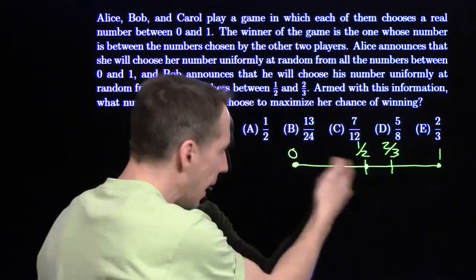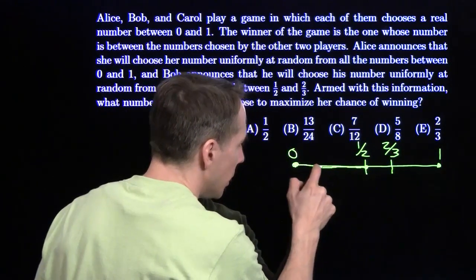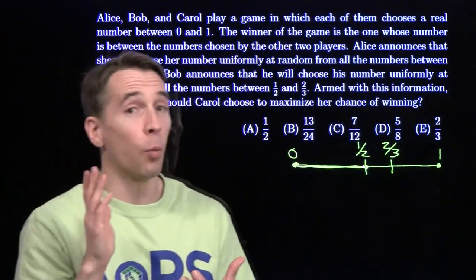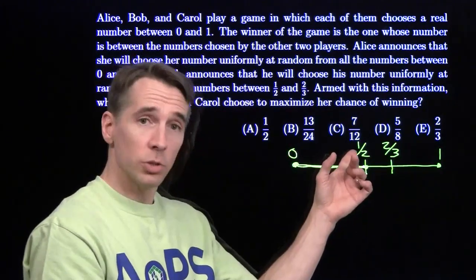Bob lands on the right, and Alice ends up on the left exactly half the time, whenever she chooses between 0 and 1/2. So Carol has a probability of 1/2 of winning when she chooses 1/2.